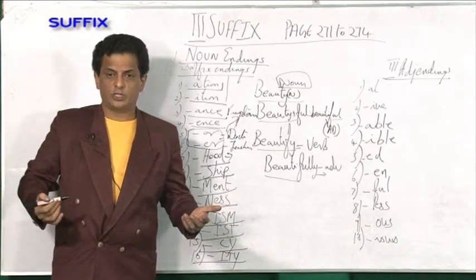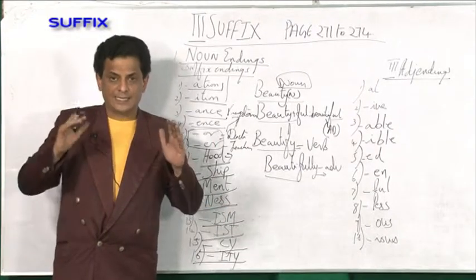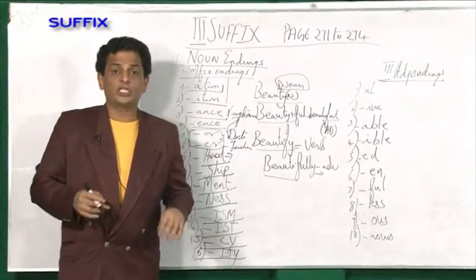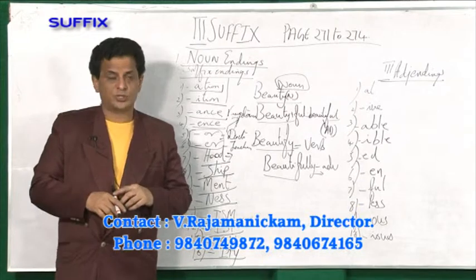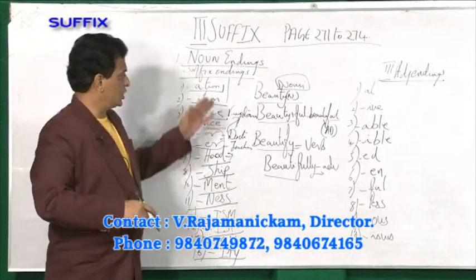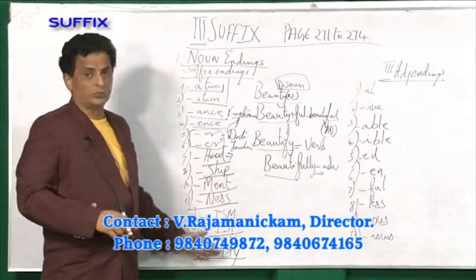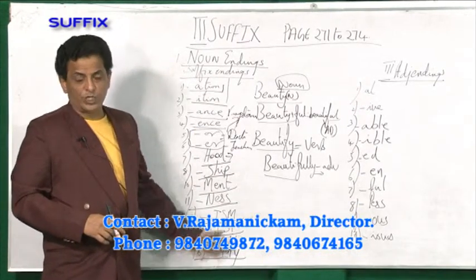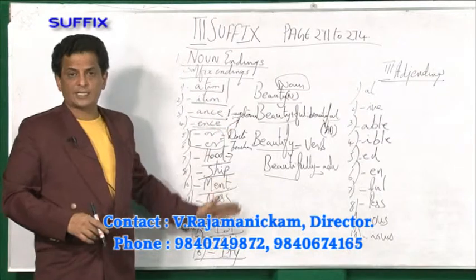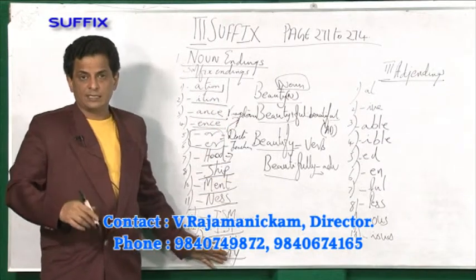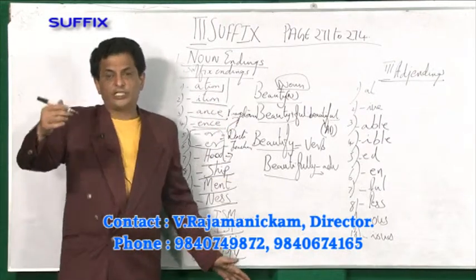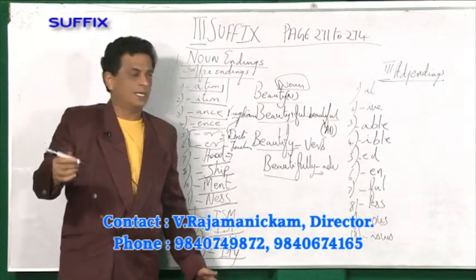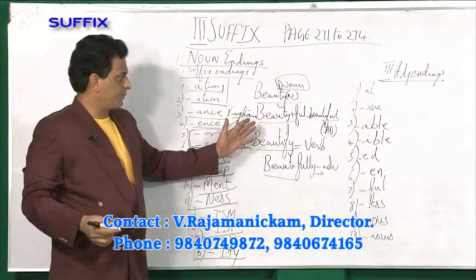Abstract nouns mean words that do not have a shape — they are shapeless nouns. You should be very good at this, because only if you are able to understand this, sentence formation becomes very easy.